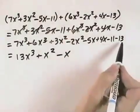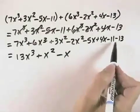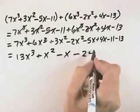And finally, -11 minus 13 is the same as -11 plus -13, which is -24.